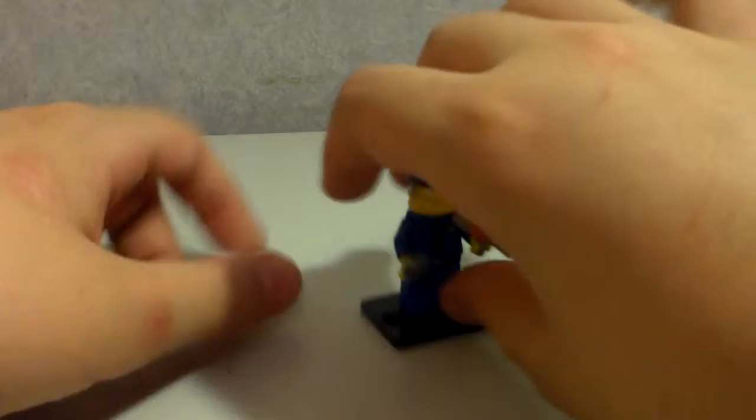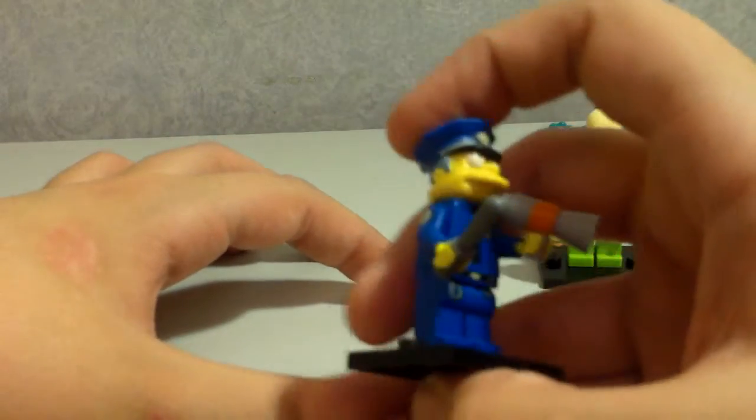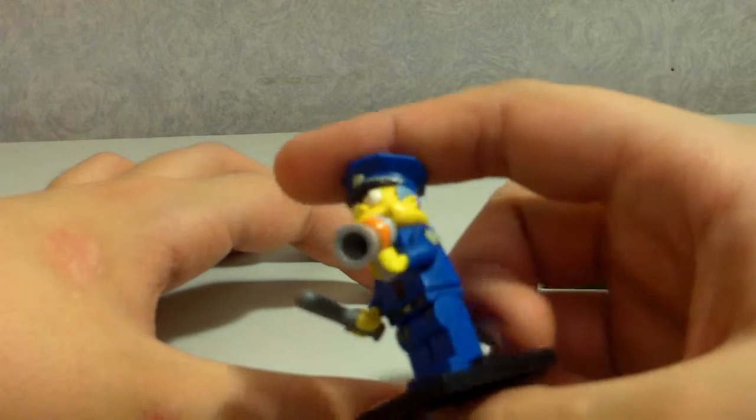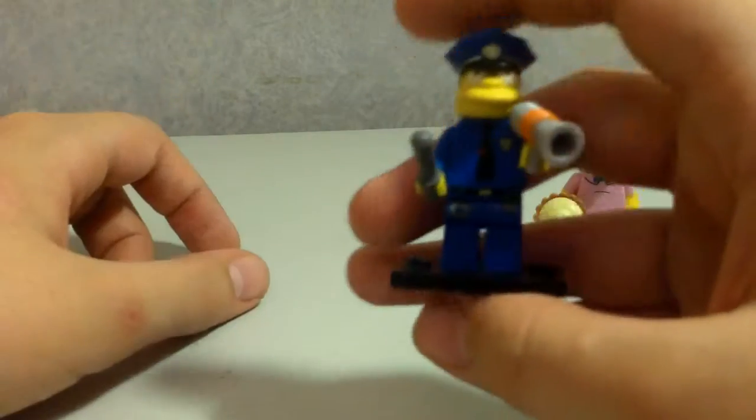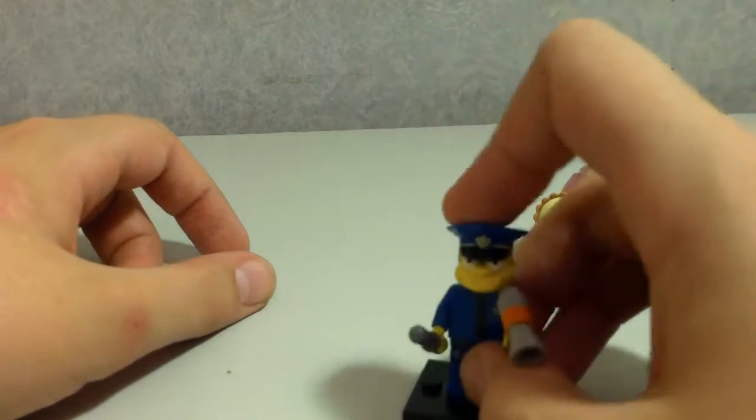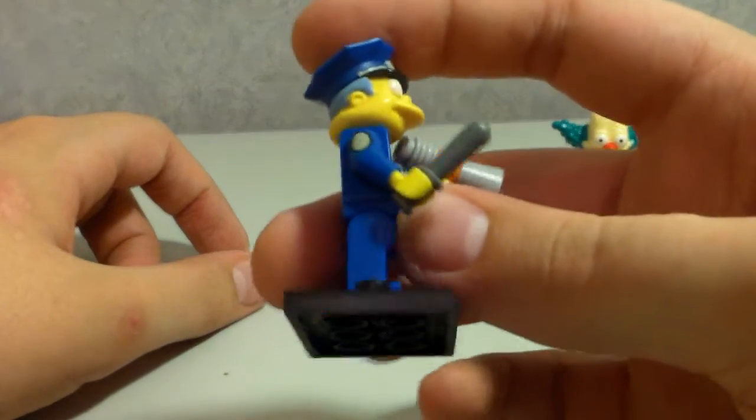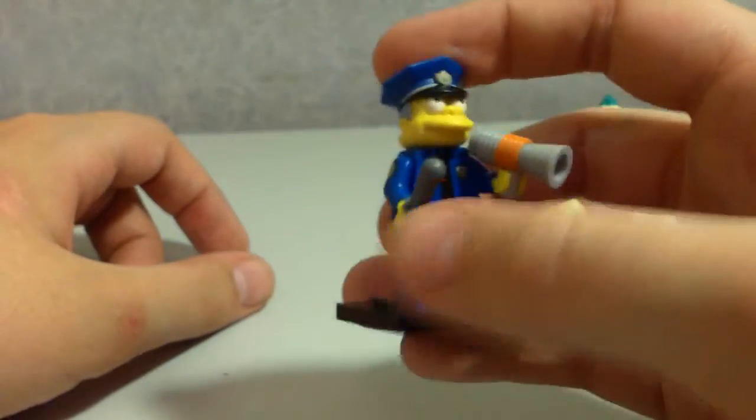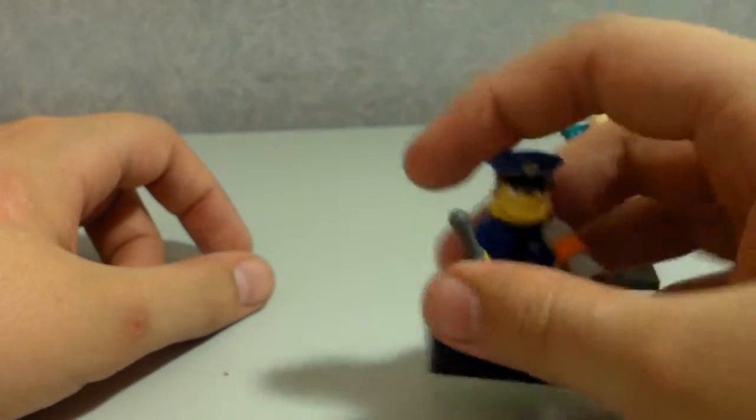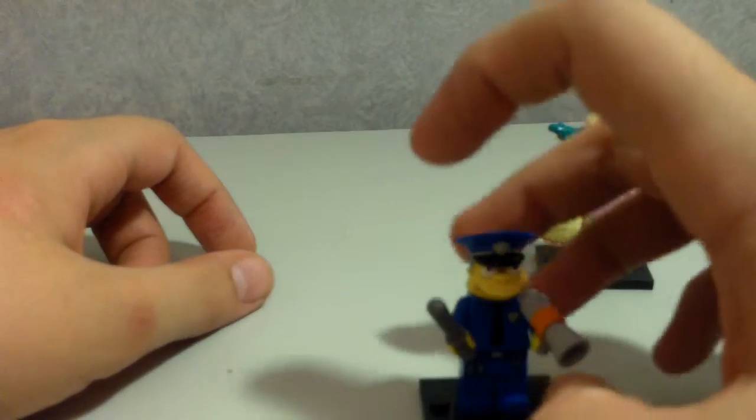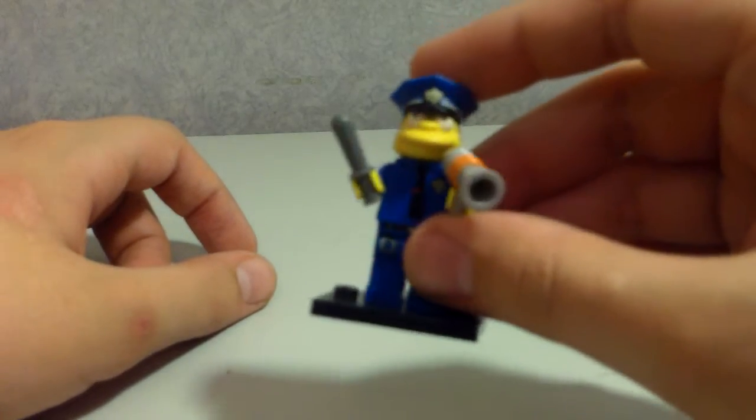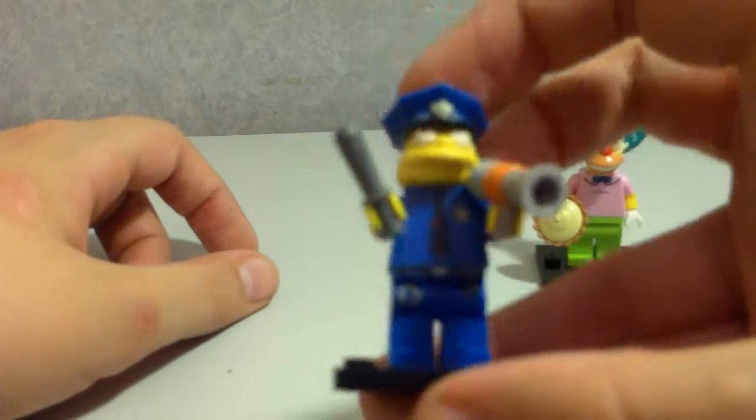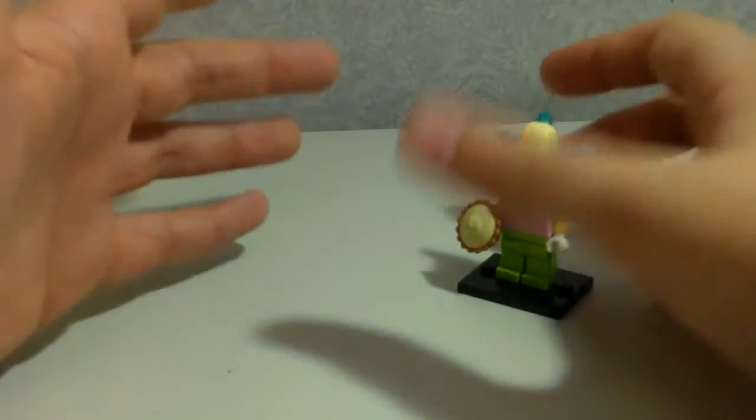And then we've got Chief Wiggum here and he's got like a megaphone, voice enhancer thing, you know, "you're surrounded" and all that sort of stuff. And we've got like a baton here. I think the police dude from Series 11 came with a baton, yeah I think he did, but I think his was brown whereas this one's like a gray color. But yeah, very cool, a nice head sculpt there, very nice, very cool figure.